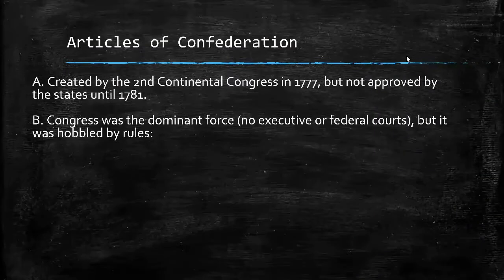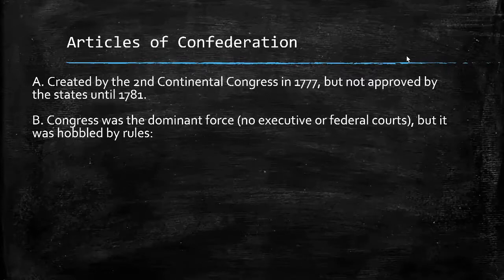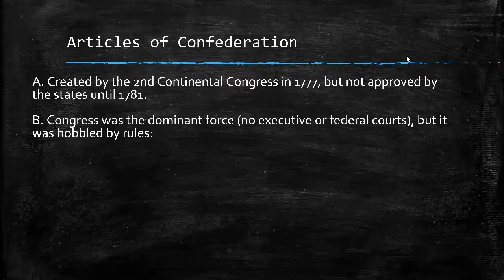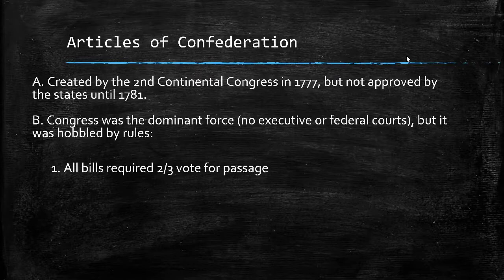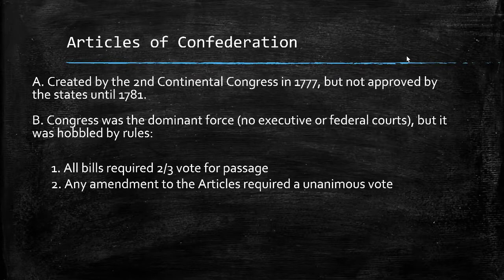The Articles of Confederation were created by the Continental Congress in 1777 under some duress, as the Revolutionary War had not been going well up to that point. The final approval by the states occurred in 1781. Government under the Articles was set up with a Congress as the dominant force — there were no executive or judicial branches. It was also hobbled by rules, including all bills requiring a two-thirds vote for passage, which is very difficult to get. Any amendments to the Articles required a unanimous vote — nearly impossible. Each state also had one vote, which definitely annoyed the larger and more populous states.